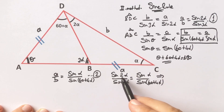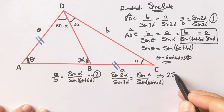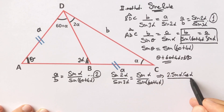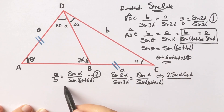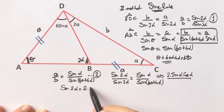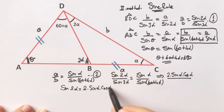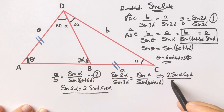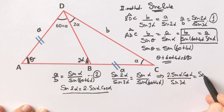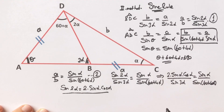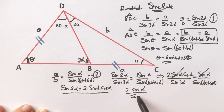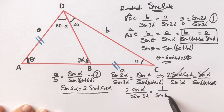Substituting the double angle formula — sine 2 alpha equals 2 times sine alpha times cosine alpha — and simplifying, since sine alpha cancels, we get: sine 3 alpha equals sine alpha over sine 60 plus 4 alpha. Further simplifying: 2 times cosine alpha over sine 3 alpha equals 1 over sine of 60 plus 4 alpha.